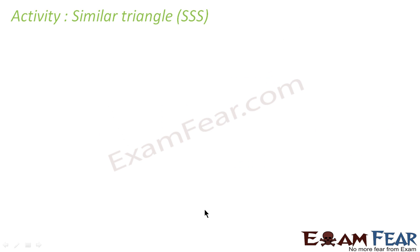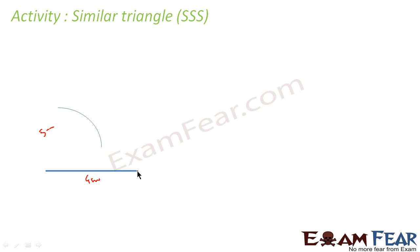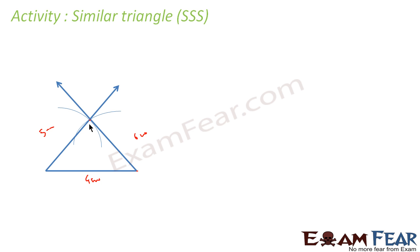Let's do some activity for similar triangles — side side side. Let's draw a line of length, let's suppose 4cm. Now let's draw an arc; let's suppose this is 5cm. And again from this point, let's draw an arc of 6cm. You get this triangle with sides 5cm, 6cm, and 4cm.